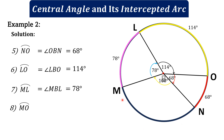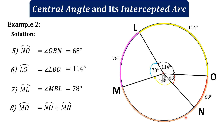For number eight, arc MO is the addition of arc MN and arc NO. Since angle MBN is a central angle measuring 100 degrees, arc MN = 100 degrees. Therefore arc MO = arc MN + arc NO = 100 + 68 = 168 degrees.